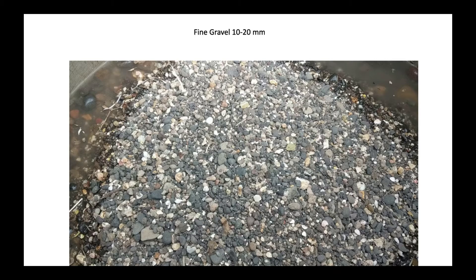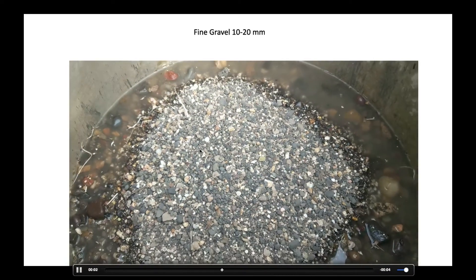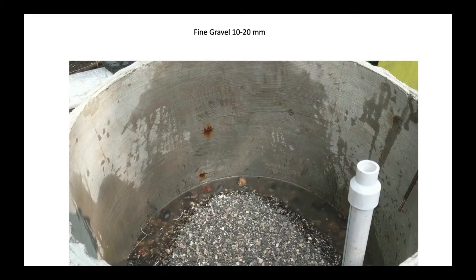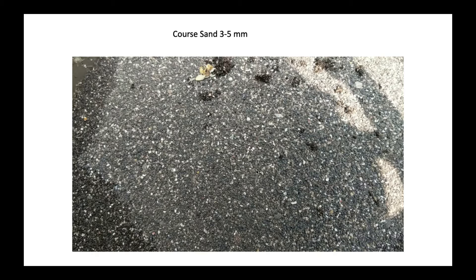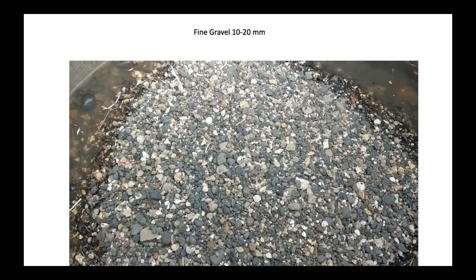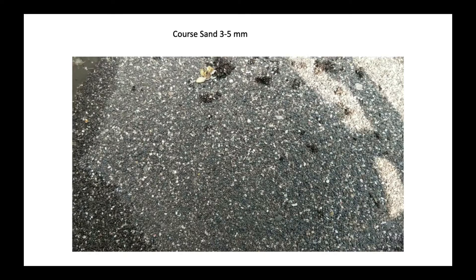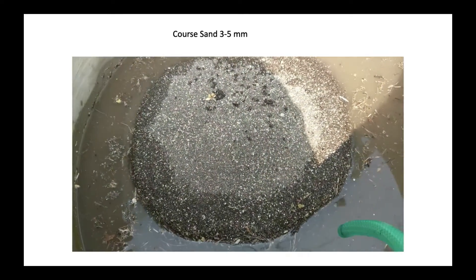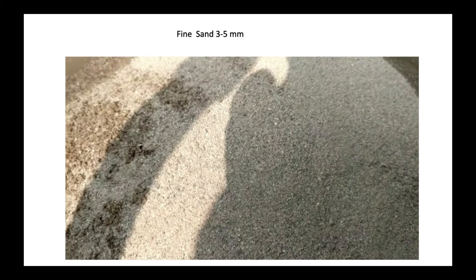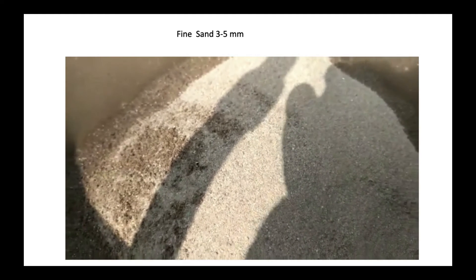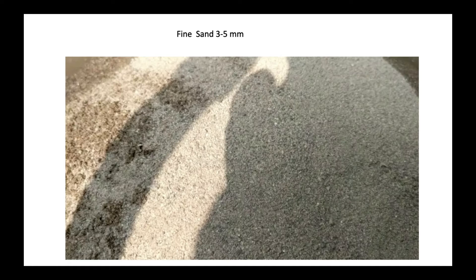The second layer is fine gravel. Following that is coarse sand, which is smaller than fine gravel. Next we have fine sand of 3 to 5 millimeters and ultra-fine sand, followed by the topmost layer.